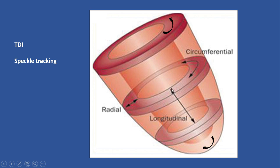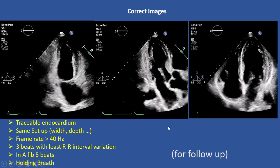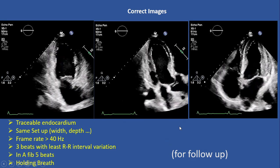For strain echo we can use two techniques — tissue Doppler (TDI) and speckle tracking. The first and most important part for performing strain echo is having the right and correct image.